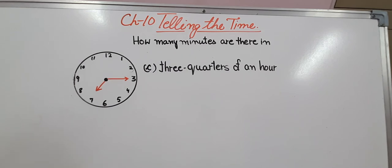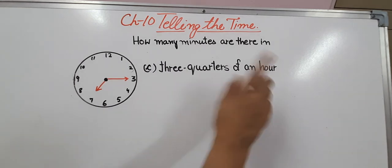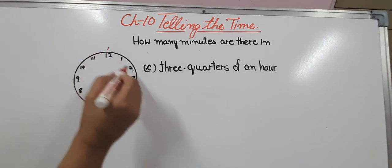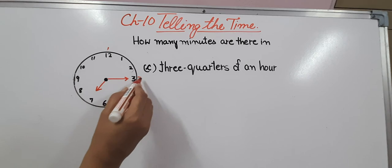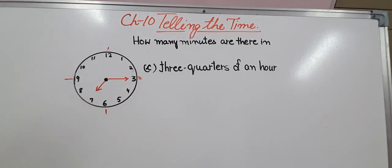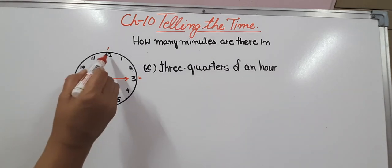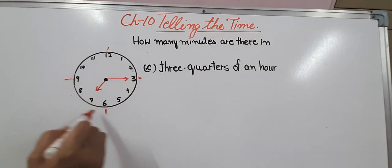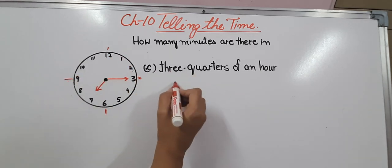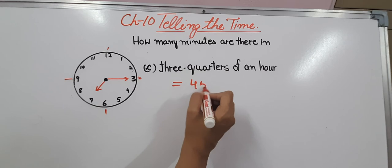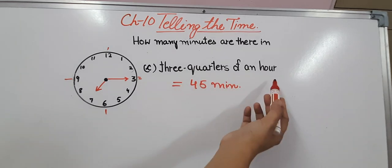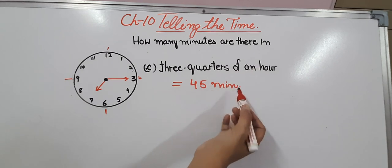How many minutes are there in 3 quarters of an hour? 3 quarters means 1 quarter, 2 quarters, and from here to here it will be 3 quarters. And we know that when the minute hand moves from 12 to 9, that is it is covering the 3 quarters, it will have 45 minutes. So 3 quarters of an hour equals 45 minutes.